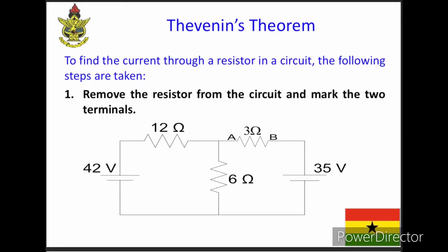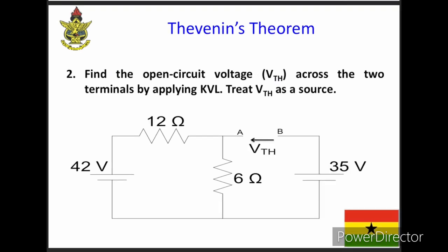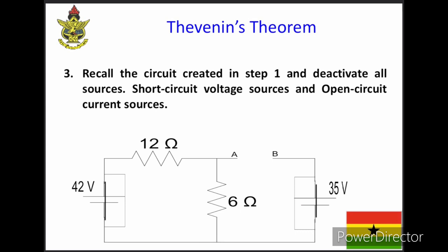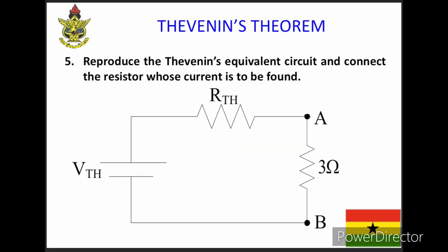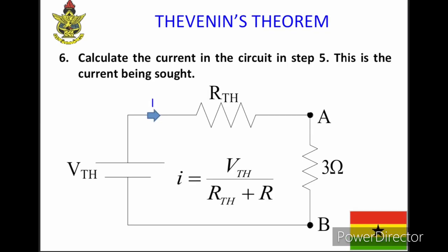Step one: remove the resistor from the circuit and mark the two terminals as shown in the diagram. Step two: find the open-circuit voltage V_TH across the terminals by applying Kirchhoff's voltage law. Step three: redraw the circuit from step one and deactivate all sources — short-circuit voltage sources and open-circuit current sources. Step four: find the total resistance as seen from the two terminals. Step five: reproduce the Thevenin equivalent circuit and connect the resistor whose current is to be found. Step six: compute the current in that circuit.